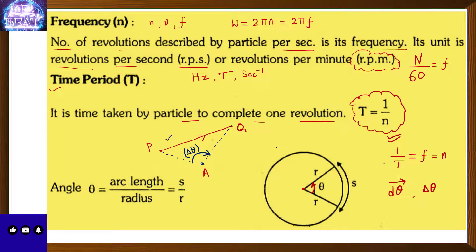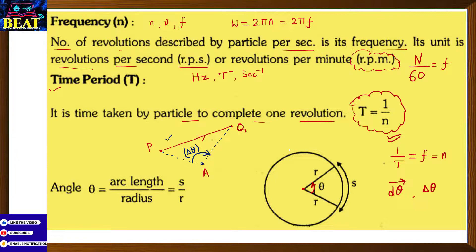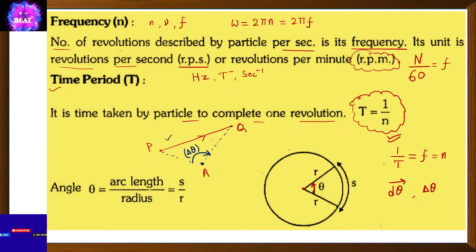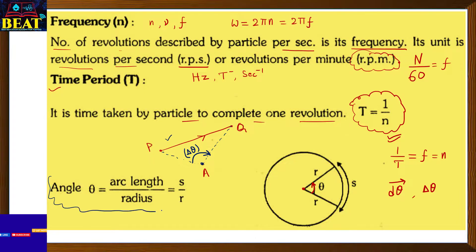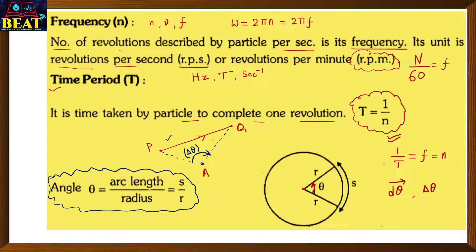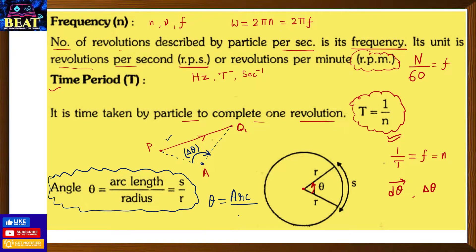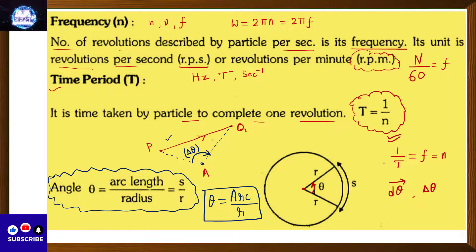An important conceptual point: angular displacement is not only for circular motion — it can be defined for any curvilinear or straight-line motion with respect to any reference point. One particle can have angular displacement with respect to another moving particle as well. The formula for angular displacement is: angle θ = arc length (s) upon radius (r). The MKS unit of angular displacement is radians.